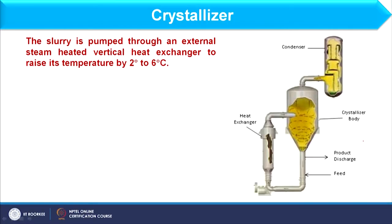As far as a crystallizer is concerned, it looks like this. These are some basic equipment. We have some basic units involved in the crystallizer such as a heat exchanger, the main crystallizer body, and a condenser to condense the vapor, which generates vacuum in the system.